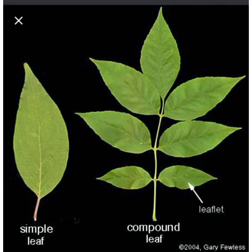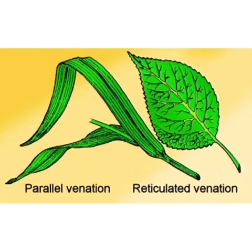Examples of compound leaves include gulmohar, rose, etc. Now we'll be talking about types of venation. Venation is the arrangement of veins and veinlets on the lamina of a leaf.